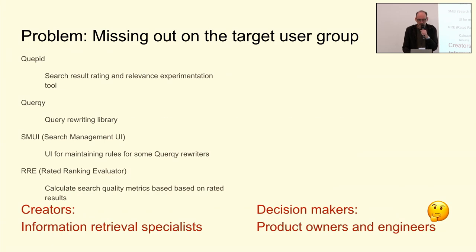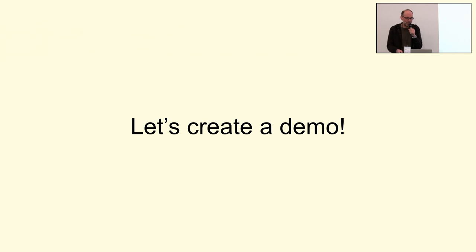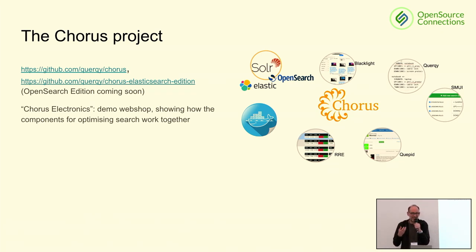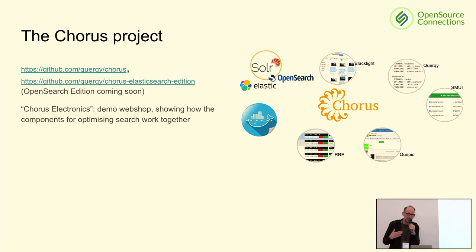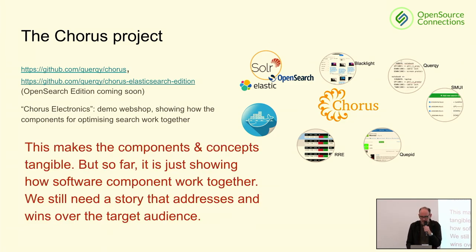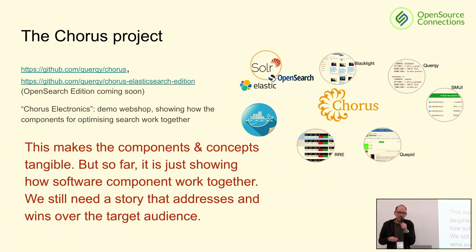What comes to mind is: let's create a demo showing how this software works. Luckily, the maintainers of these libraries knew each other, and we created a demo application called Chorus — so all these libraries sing to the same song. It's a demo application that exemplifies how you can put together these components and create an online shop — a fake online store called the Chorus Electronics Store — showing how these components work together to improve search result quality. Nevertheless, at this point we are just showing how the components work together. We still need to tell a story, and that story has to address the target audience and win them over.